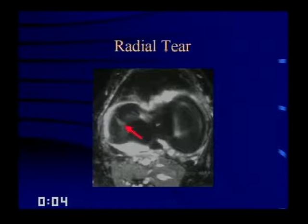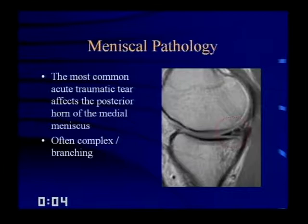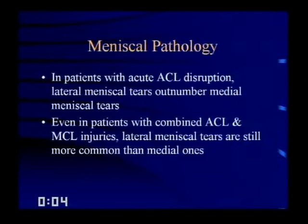The most common acute traumatic tear affects the posterior horn of the medial meniscus — often complex and branching. But in patients with acute ACL disruption, lateral meniscal tears actually outnumber medial meniscal tears. Even in patients with combined ACL and MCL injuries, lateral meniscal tears are still more common than medial ones.